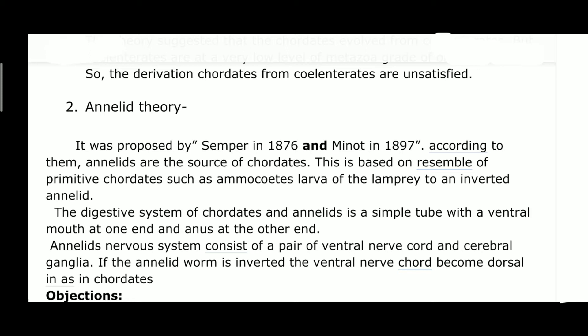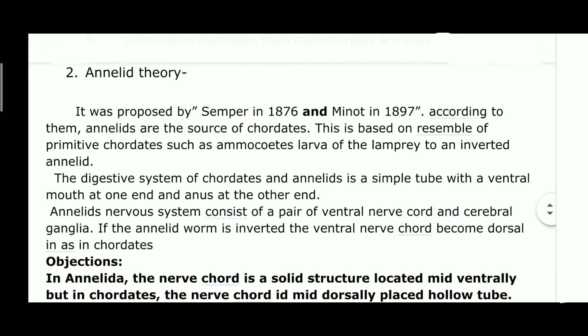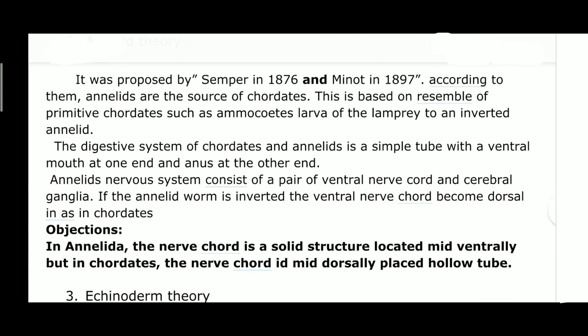Observing the nervous system — annelids have a pair of ventral nerve cords and cerebral ganglia. In the annelid theory, the annelid's inverted ventral nerve cord becomes dorsal in chordates. However, a major objection to this theory is that the annelid nerve cord is a solid structure located mid-ventrally, whereas in chordates the nerve cord is a mid-dorsally placed hollow tube.